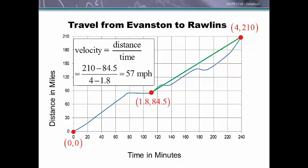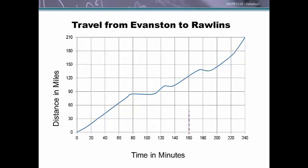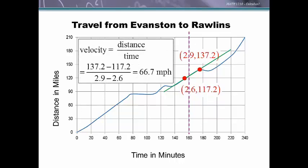Let's say we looked at the speedometer exactly 160 minutes into the trip. If we hadn't recorded that, but had other values at nearby time intervals, we could look at the time intervals containing 160 minutes. At 2.6 hours we'd gone 117 miles, and at 2.9 hours we'd gone 137.2 miles. Computing the slope of that secant line gives 66.7 miles per hour — a reasonable estimate that we were probably going around 67 miles per hour at that instant. We can approximate instantaneous velocity using average velocity between nearby points.